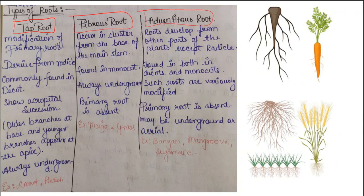Tap root is a modification of the primary root. The main root of the plant is called the primary root. From this primary root further branches arise, known as secondary roots, and from secondary roots further branches are known as tertiary roots. The primary root is the major root of the plant, and tap root is its modification.